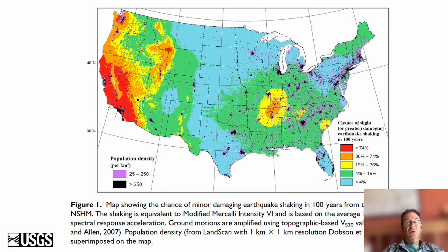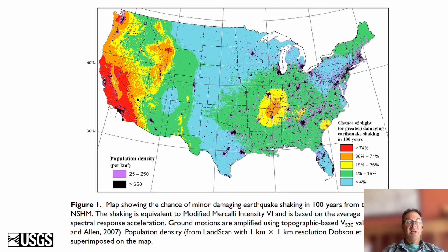We communicate this hazard map not only through engineering parameters of spectral acceleration needed for the design of structures in long-term risk analysis, but also in terms of intensity so that we can communicate more generally to a wider audience. Here we have the probability of shaking over intensity six, which is where damage begins.